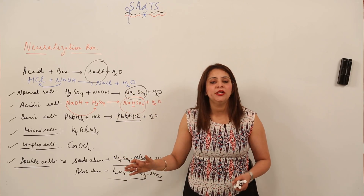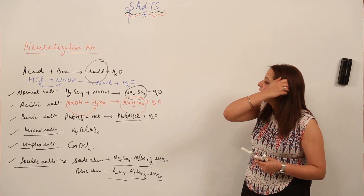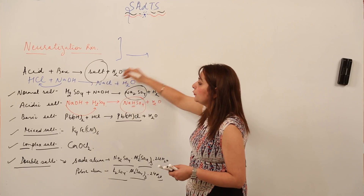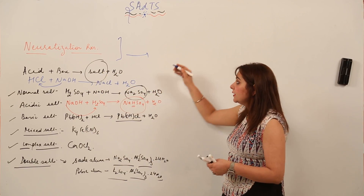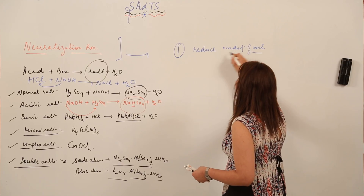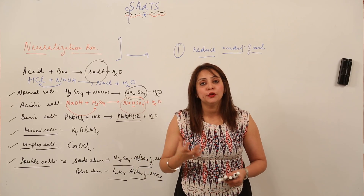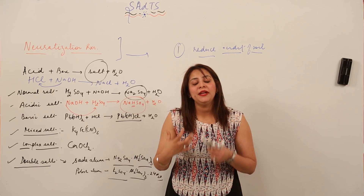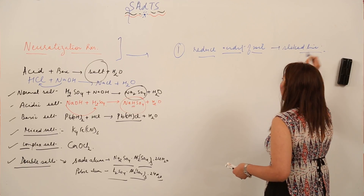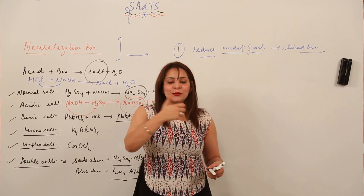Apart from salt formation, you must be curious to know where else the neutralization reaction is used. This reaction is used to reduce the acidity of soil. Some plants grow well in acidic soil and some in alkaline soil, depending on the plant's demand. We can reduce the acidity of soil by adding slaked lime to it, which reduces the soil's acidity.